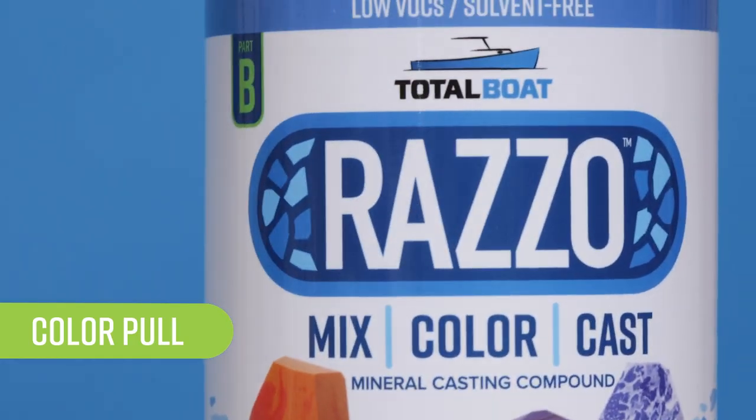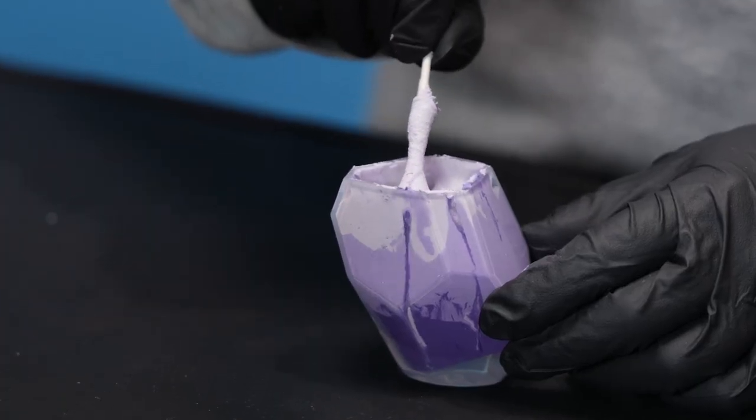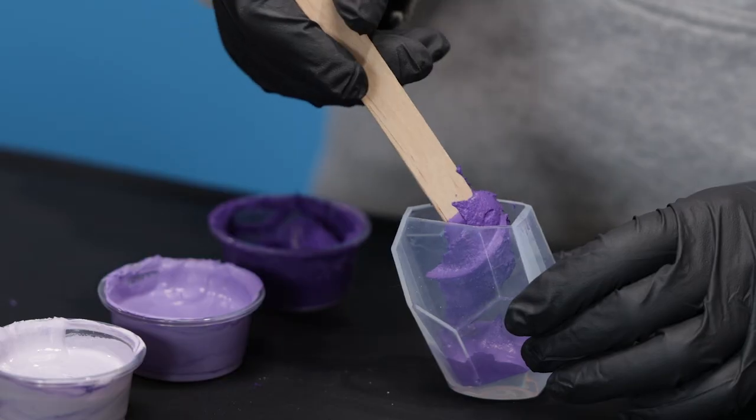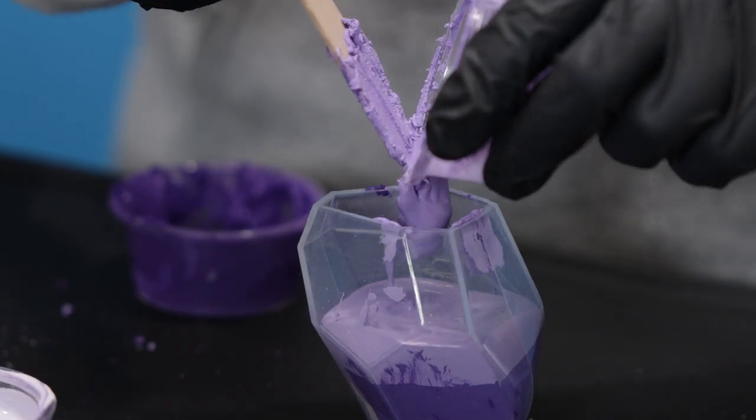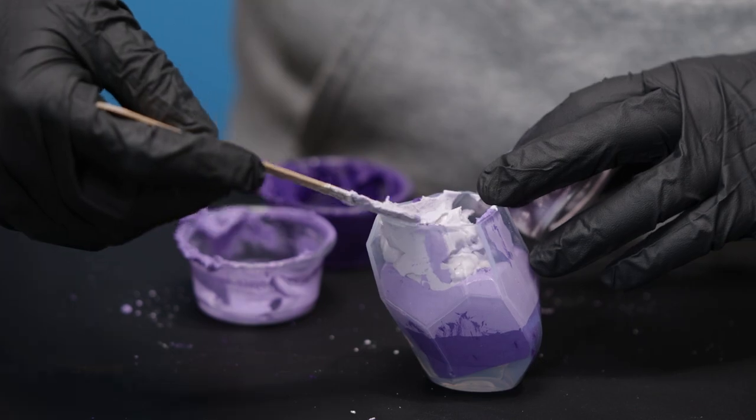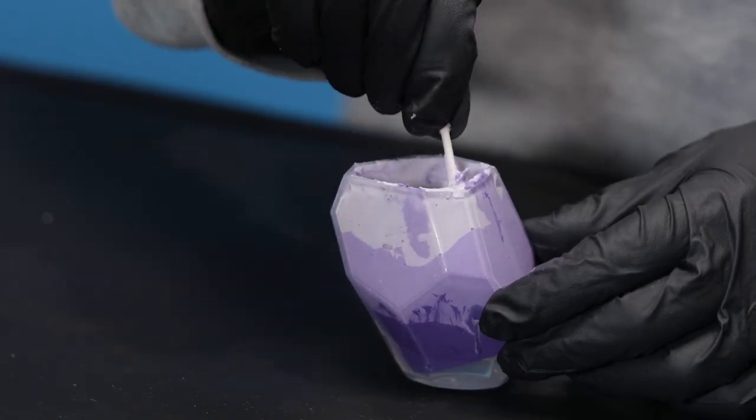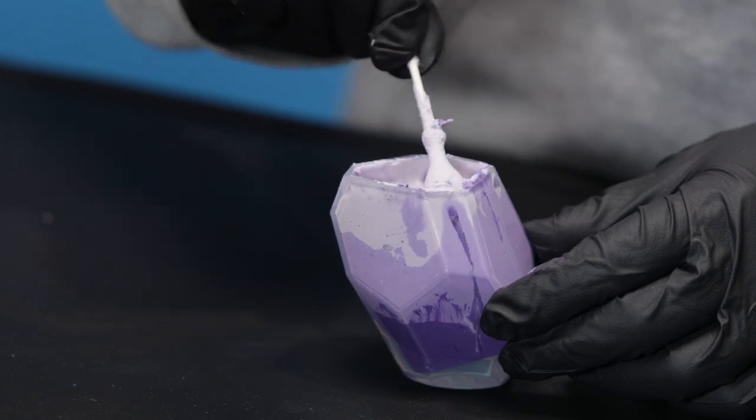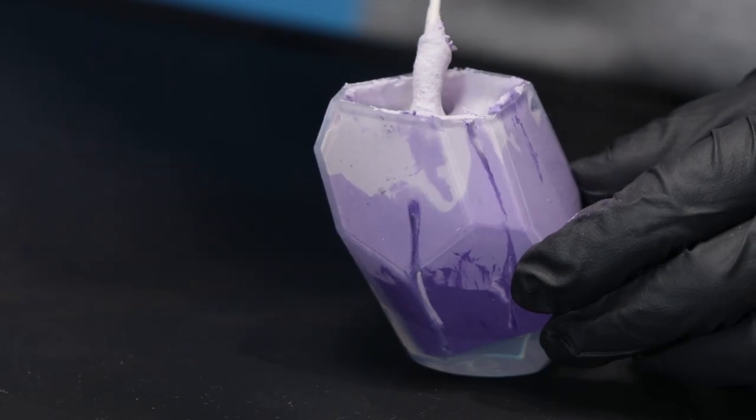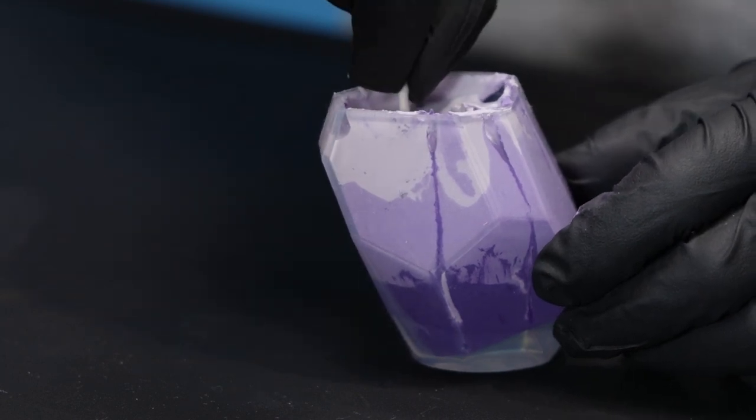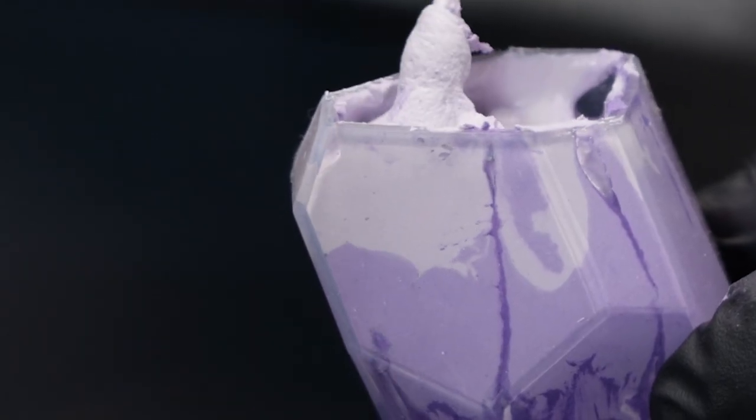Color pull: Add visual interest by pulling colors along the surface of your casting using the color pull technique. Pour layers of different colors of Razzo into your mold. To create the color pull effect, use a thin tool or stick such as a cotton swab. Try experimenting with tools of different widths. Submerge your tool into the casting, then pull the material along the surface of the mold, maintaining contact as you pull.